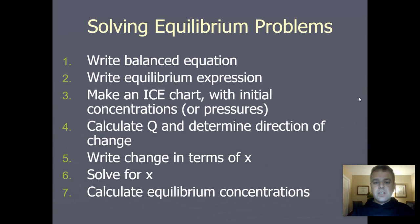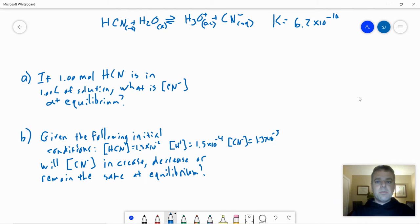So let's take a look at a sample problem here. I have HCN plus water makes H3O plus plus CN minus. Now if you are looking ahead, this is actually an acid base problem, so technically we're doing a Unit 8 calculation, but that's all right. Everything works the same way.